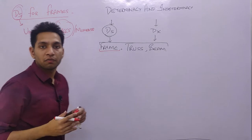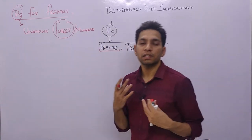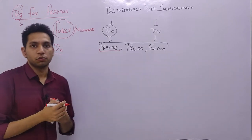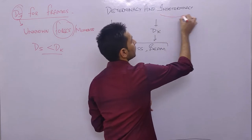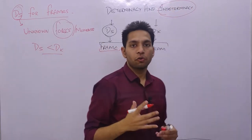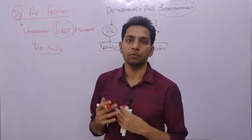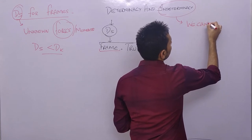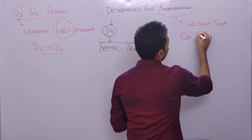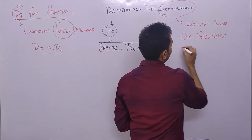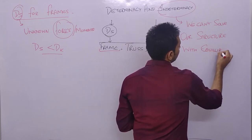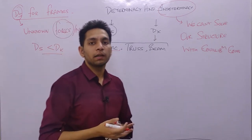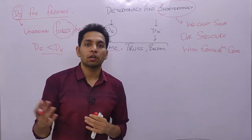The force method is used when the degree of static indeterminacy (ds) is less than the degree of kinematic indeterminacy (dk). Indeterminacy occurs when we cannot solve the structure directly by equations of equilibrium. In that case, we analyze the structure using force methods or displacement methods.